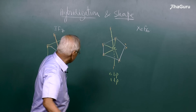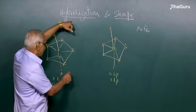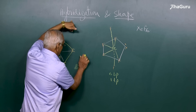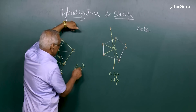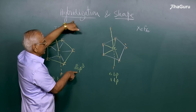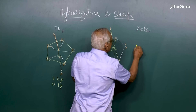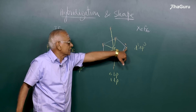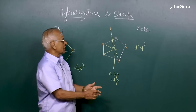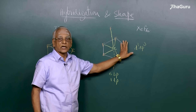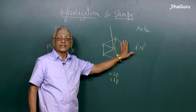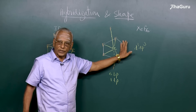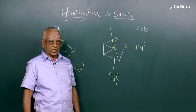For iodine heptafluoride, the hybridization is d³sp³, which corresponds to a pentagonal bipyramid. For xenon hexafluoride, the hybridization is also d³sp³, but when we consider the shape we do not count the lone pair. Because all bonds and angles are not identical, the shape is a distorted octahedron.